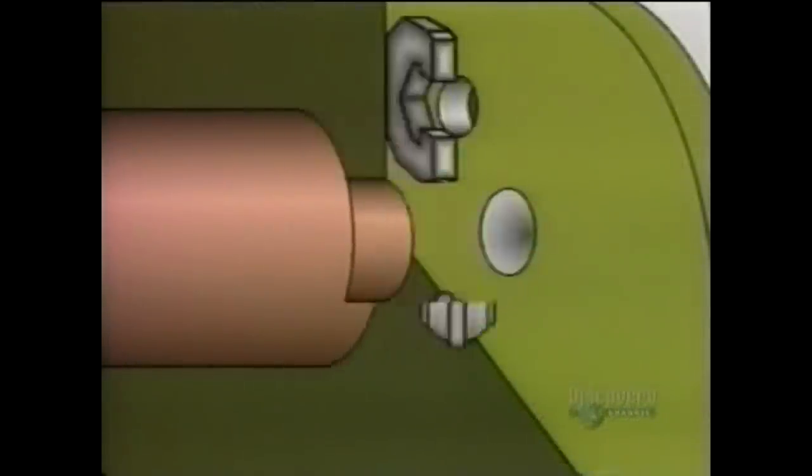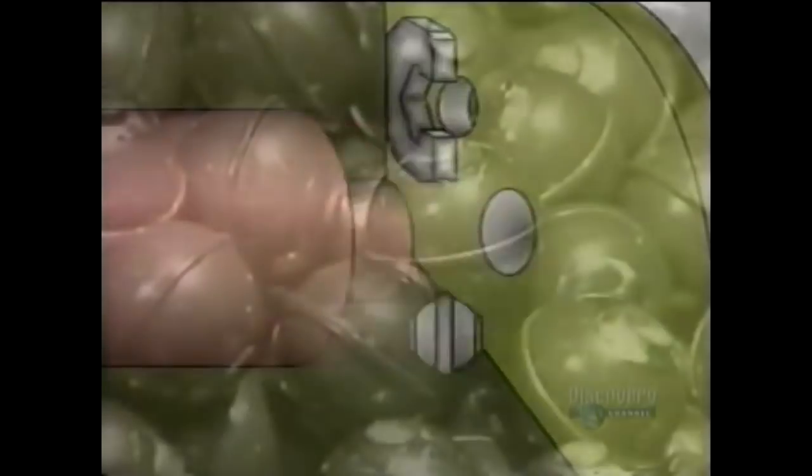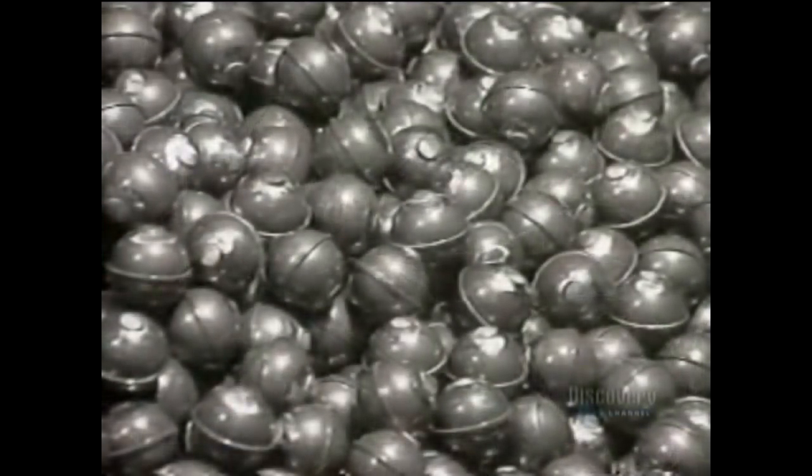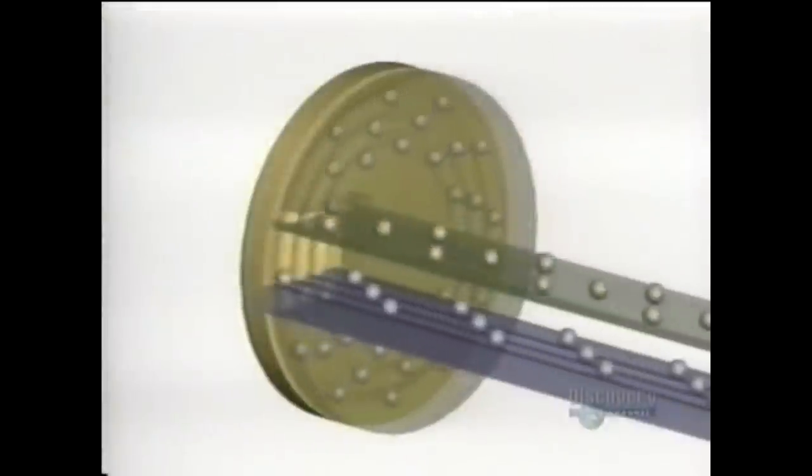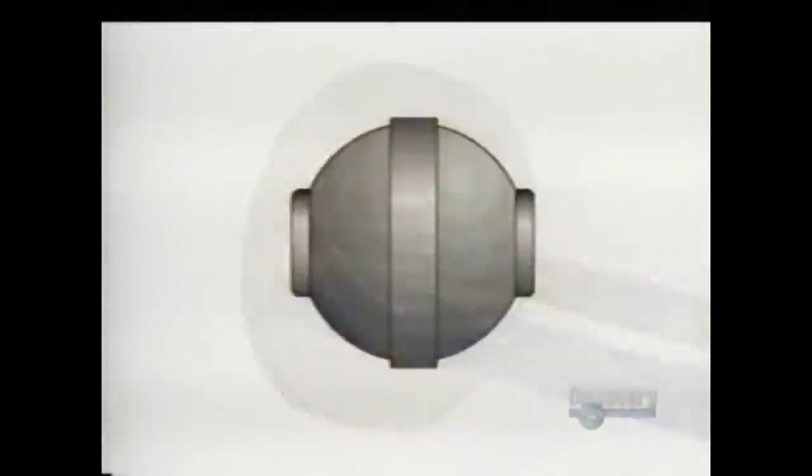These balls started out as steel wire. A machine cut them into pieces and a die punched them into rough balls. Those balls go into a grinder which removes the bumps. Then other machines round them out and give them a mirror finish.